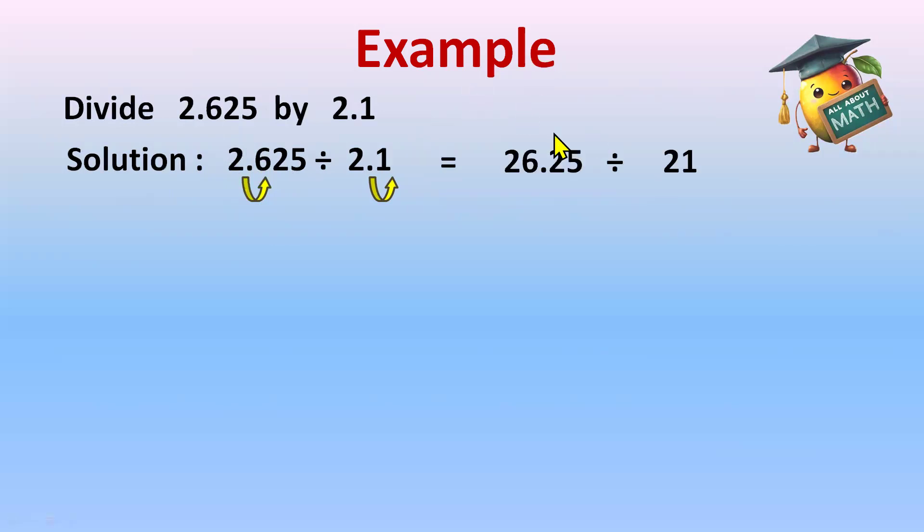Now we can divide this easily. For that, we will make a division symbol. 26.25 is the dividend and now we have the divisor as a whole number, which is 21. So we have the dividend, we have the divisor.